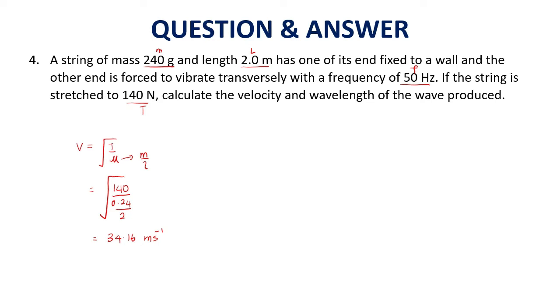And the last one is wavelength of the wave produced. V equals f lambda. 34.16 equals f, which is 50 given in the question, times lambda. Lambda will be 0.68 meters.